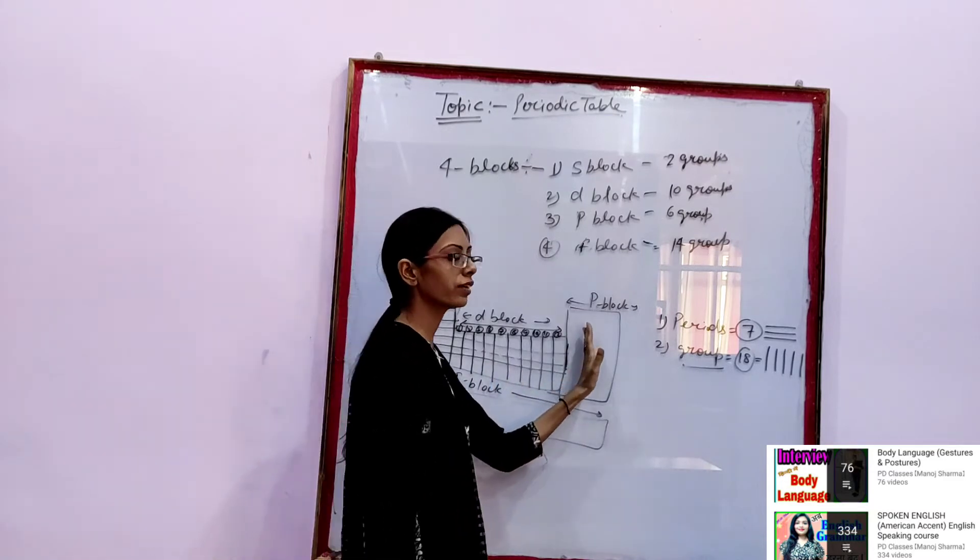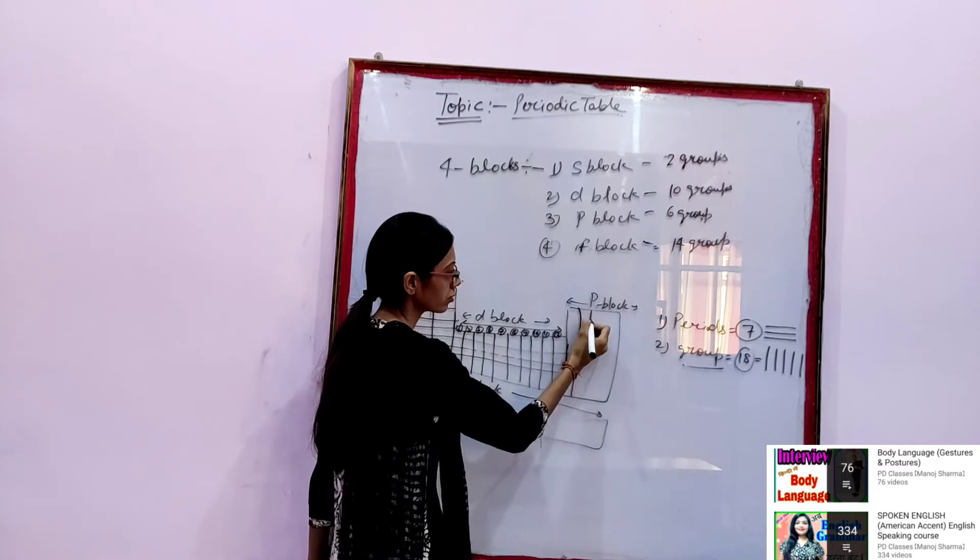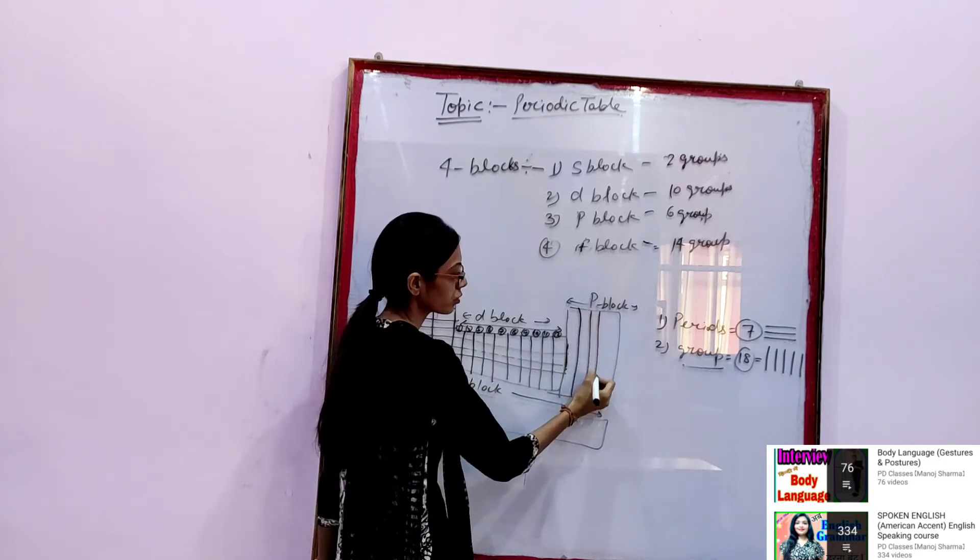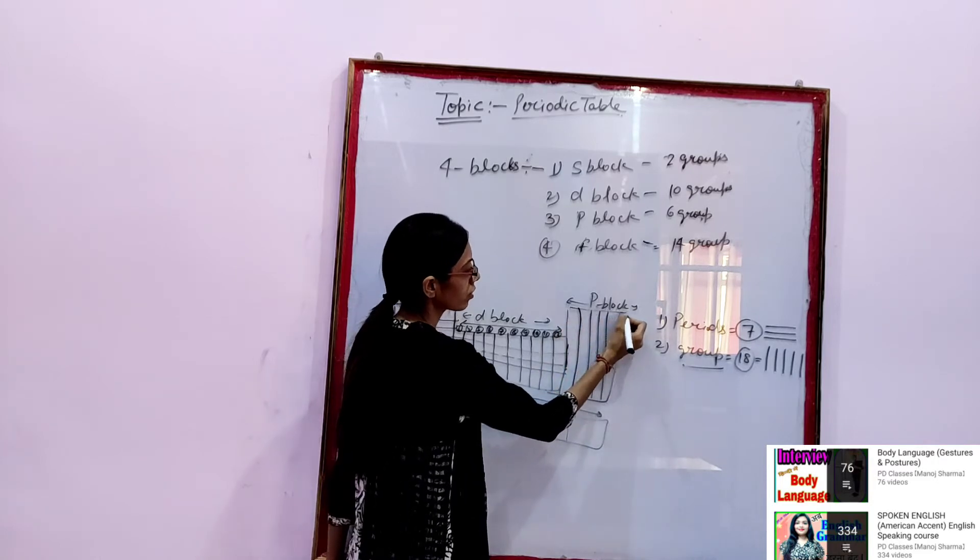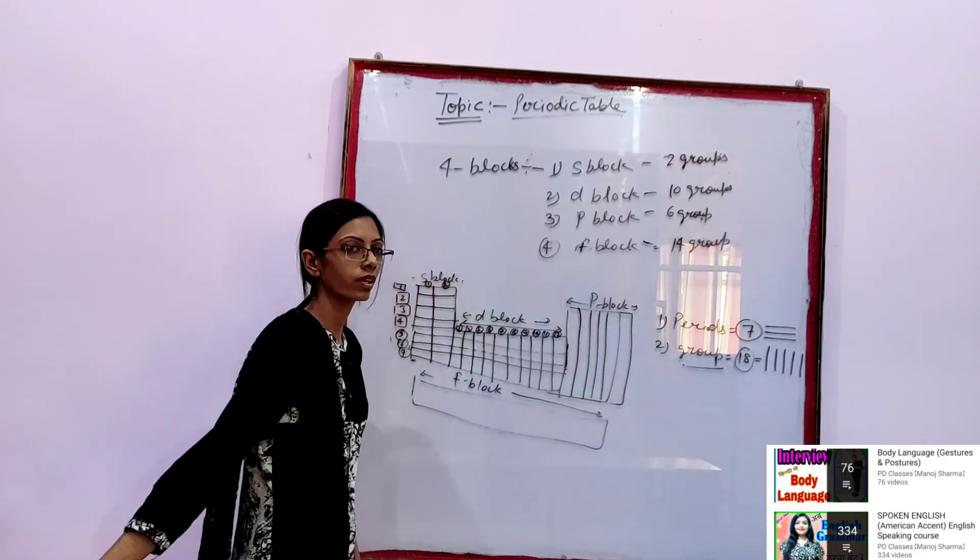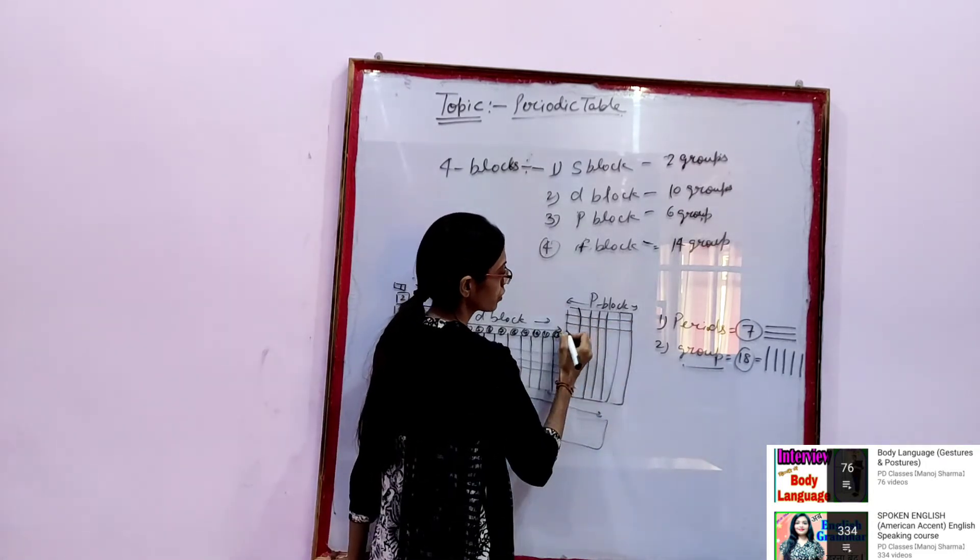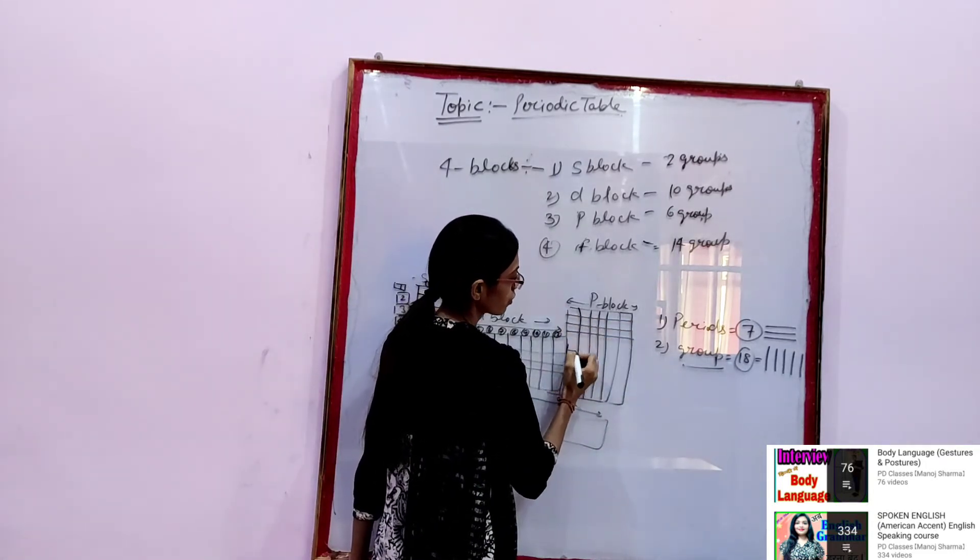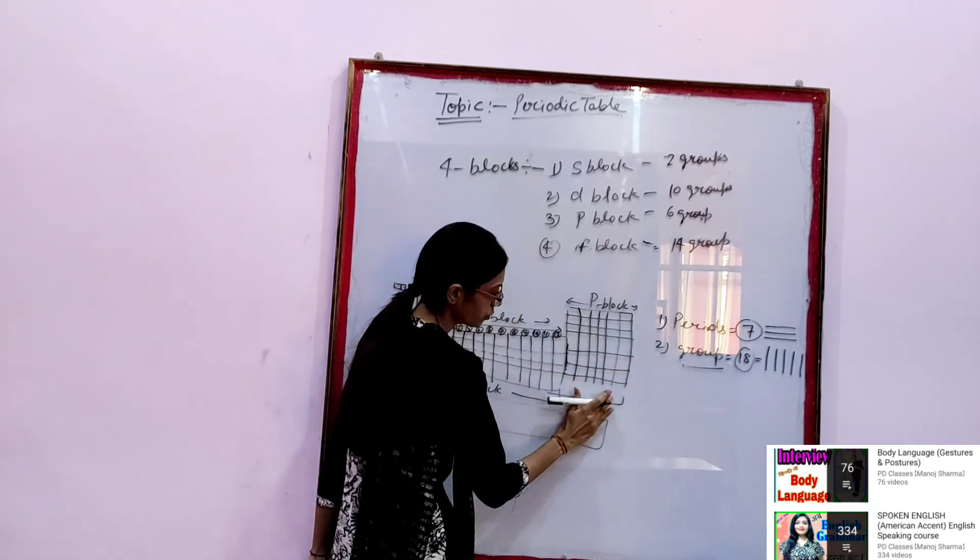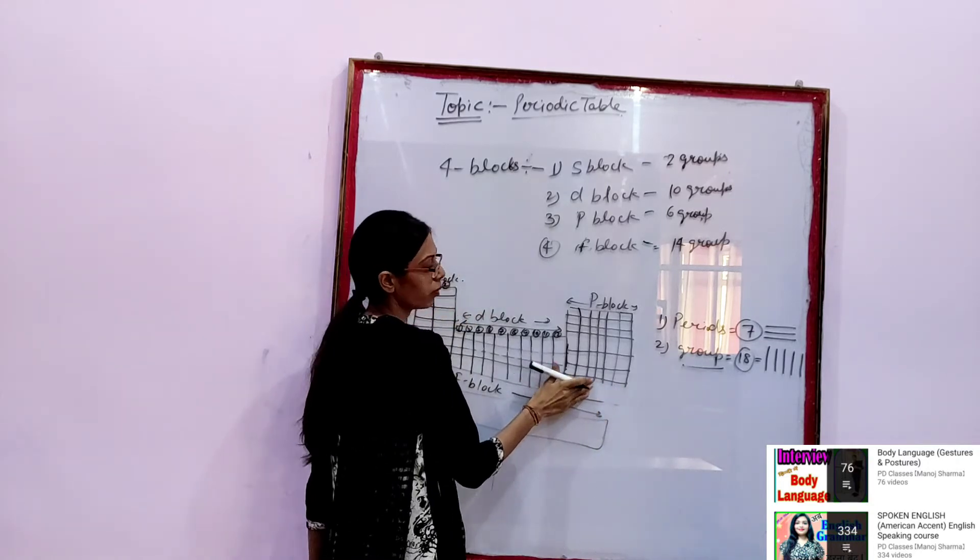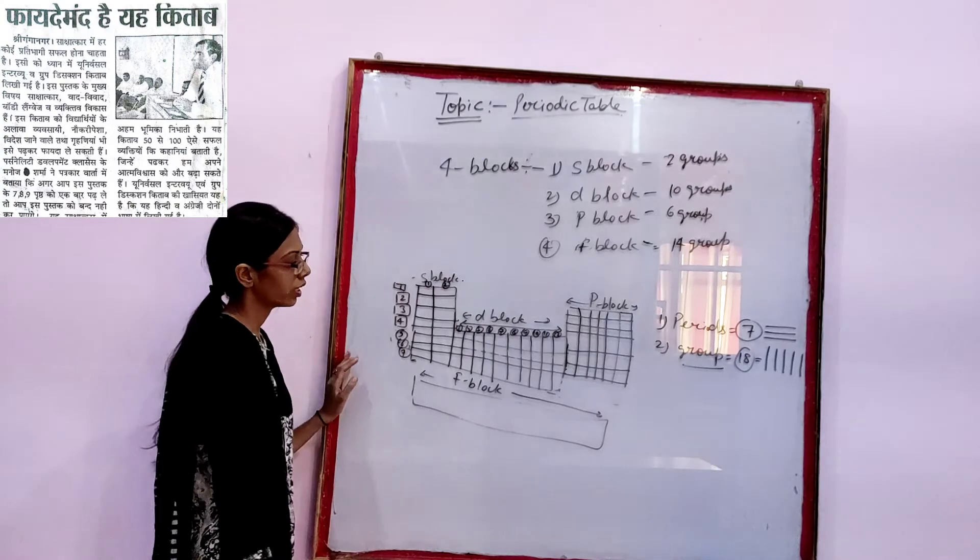As it is, you will divide P block also having 6 groups: 1, 2, 3, 4, 5, and 6. Again, 1, 2, 3, 4, 5, and 6. Seven will not be continued because you know P block has only 6 periods, right?